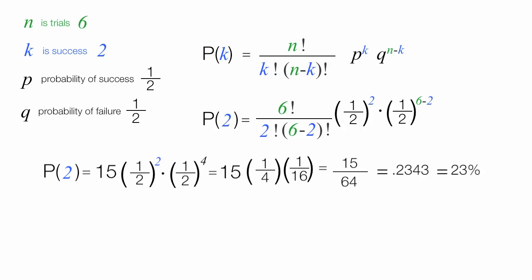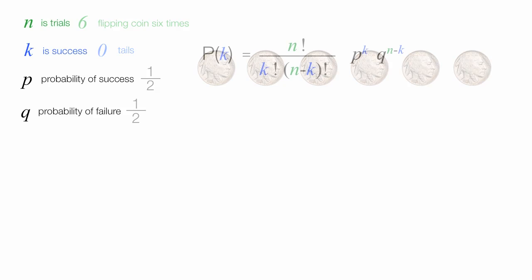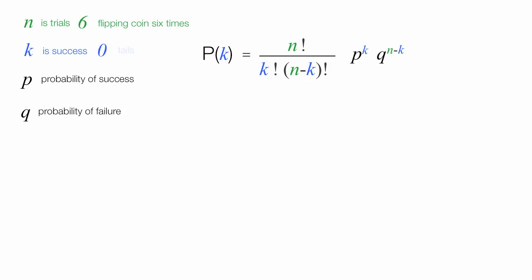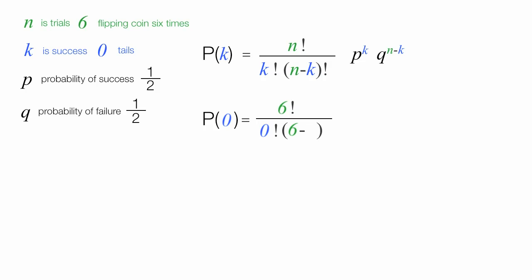What's the probability of flipping a coin six times and getting no tails — all heads? I set up the problem the same way, but this time I'll have zero instead of two. The probabilities are still one-half. So P(0) equals six factorial divided by zero factorial — which is one — times six minus zero factorial, which is six factorial, times one-half to the zero power, times one-half to the six minus zero power.